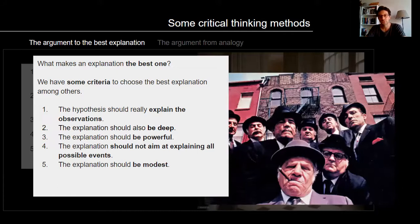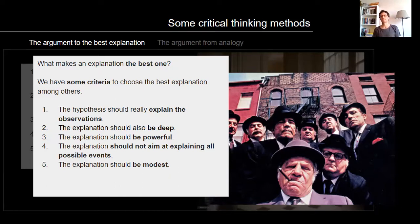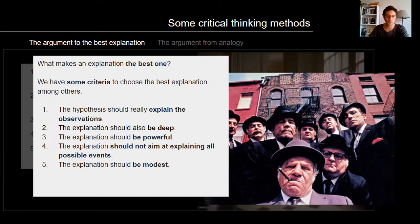An explanation should be falsifiable — there should be conditions under which the hypothesis could be proven false. Take the burglary explanation: you can say, even before looking in your room, that if none of my valuables are missing, then the burglary explanation is probably not good. But the genie explanation cannot be falsified by any observation. Fifth, the explanation should be modest — it should not aim at explaining more than what's observed. If your lock is broken and your laptop is gone, don't jump to concluding there is a conspiracy against you or that gangs have taken over the neighborhood.